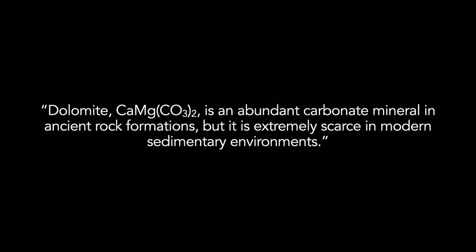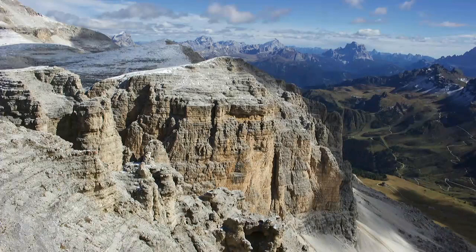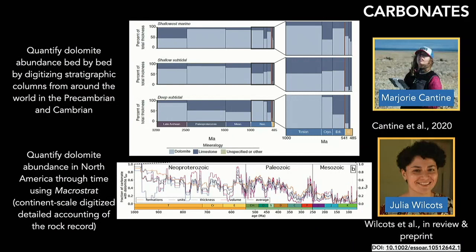Dolomite — calcium magnesium carbonate rather than calcium carbonate — is not a mineral you see a lot of in carbonate environments today. While it's scarce today, it's abundant in the rock record. Places like the Dolomiti Mountains in Italy are almost completely composed of dolomite. Using two different approaches to quantify the amount of dolomite in the rock record, particularly in the Precambrian and Neoproterozoic, the picture is extreme: something like 60–80% of Precambrian carbonates are dolomite. If our model is a dolomitization process like we see in the Bahamas, we should be worried about efforts to reconstruct past climate from Neoproterozoic carbonates.